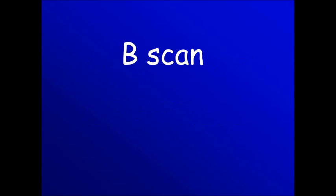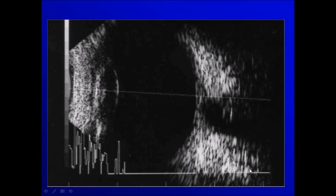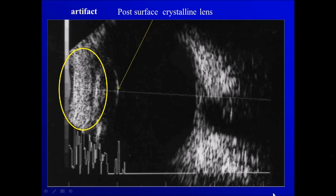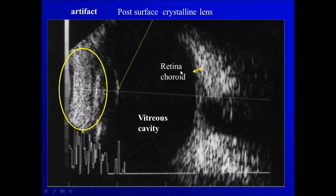I want to start this series by discussing the normal structures we see in any B-scan. This anterior part is an artifact. Then sometimes we are able to see the posterior surface of the crystalline lens. Then we have the vitreous cavity. Here we have the layer of retina and choroid. We cannot separate the retina and choroid — they are one layer except in case of retinal detachment. Then we have this hyperreflective layer of the sclera.